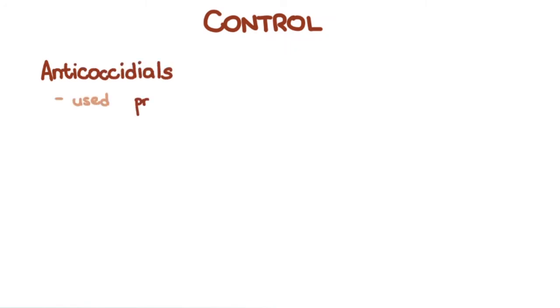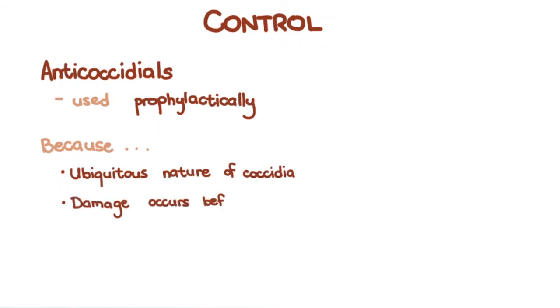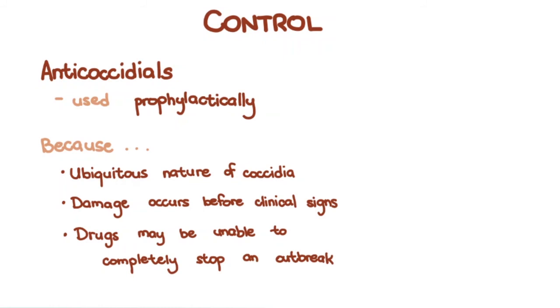Anticoccidial drugs are used prophylactically because of the ubiquitous nature of coccidia in most poultry farms, because the damage occurs before clinical signs develop, and because the drugs may be unable to completely stop an outbreak once one has developed.